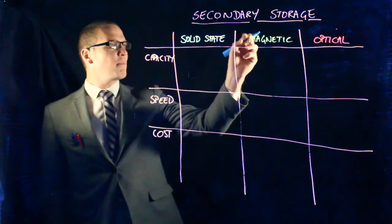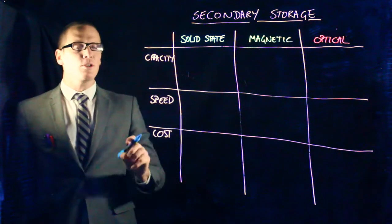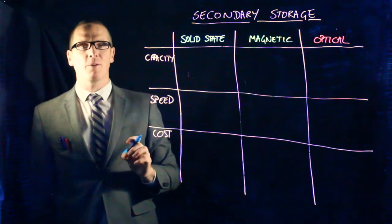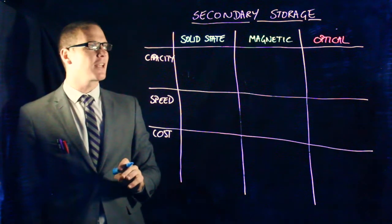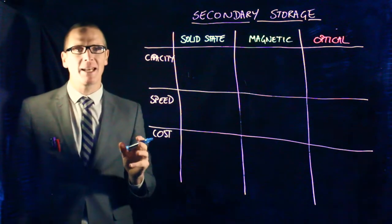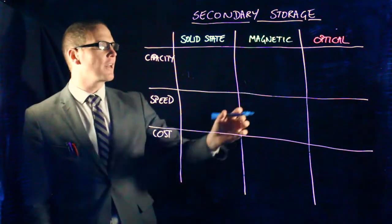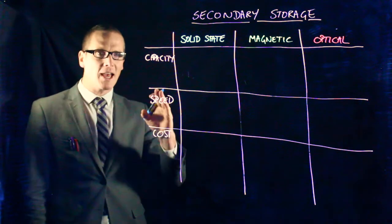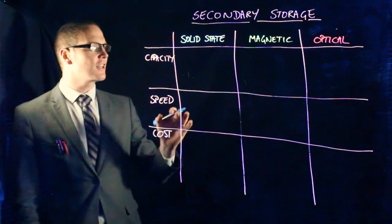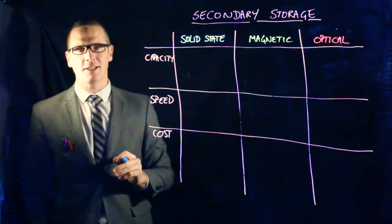So solid state, magnetic, and optical, all used for different purposes. Solid state, we're talking about flash drives, we're talking about SSDs, that sort of thing. Magnetic, we're talking about spinning disk hard drives. And then optical storage is CDs, DVDs, anything where a laser fires against the disk to give you the data.